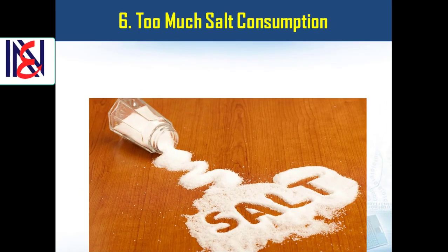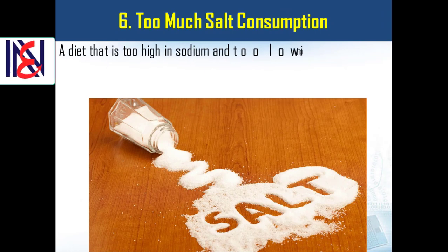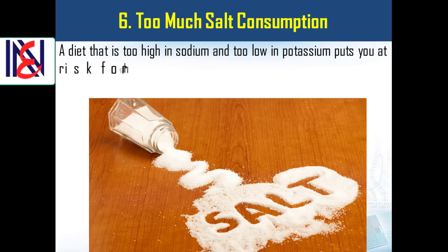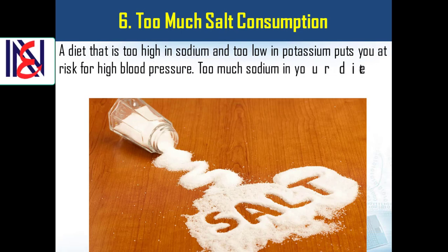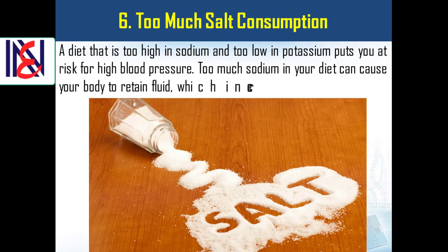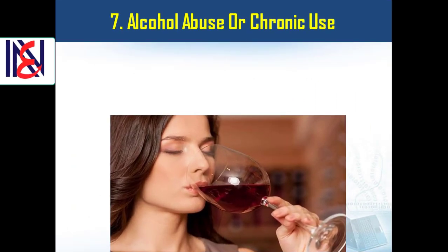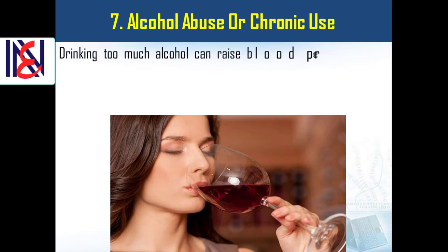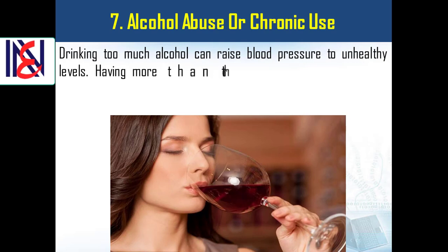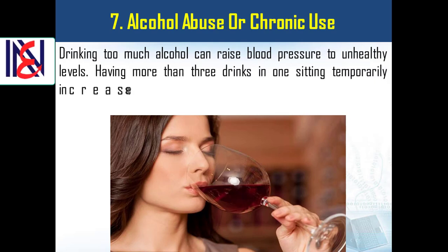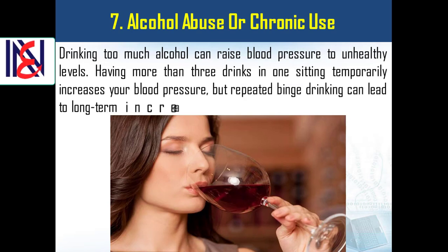Sixth, too much salt consumption. A diet that is too high in sodium and too low in potassium puts you at risk for high blood pressure. Too much sodium in your diet can cause your body to retain fluid, which increases blood pressure. Seventh, alcohol abuse or chronic use. Drinking too much alcohol can raise blood pressure to unhealthy levels. Having more than three drinks in one sitting temporarily increases your blood pressure, but repeated binge drinking can lead to long-term increases.